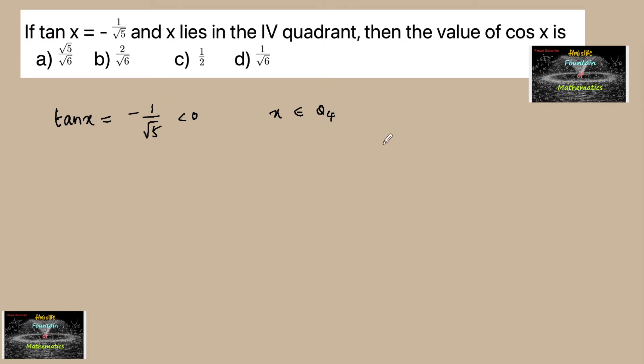We have sec²x - tan²x = 1, which implies sec²x = 1 + tan²x. So this equals 1 plus (minus 1 by root 5)